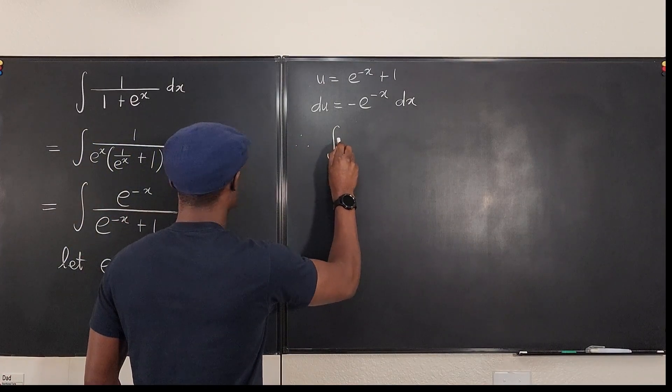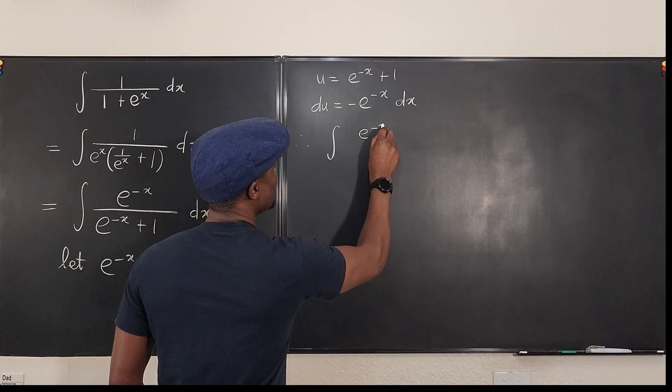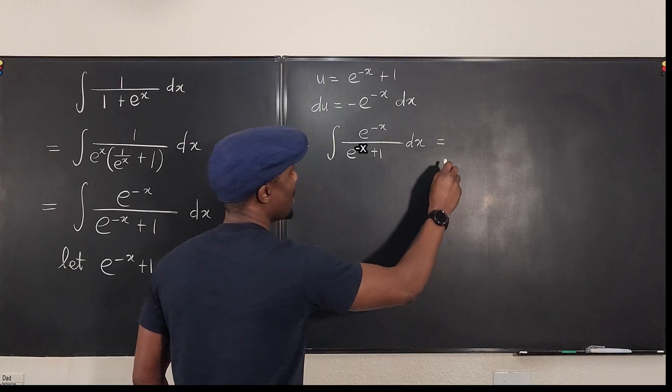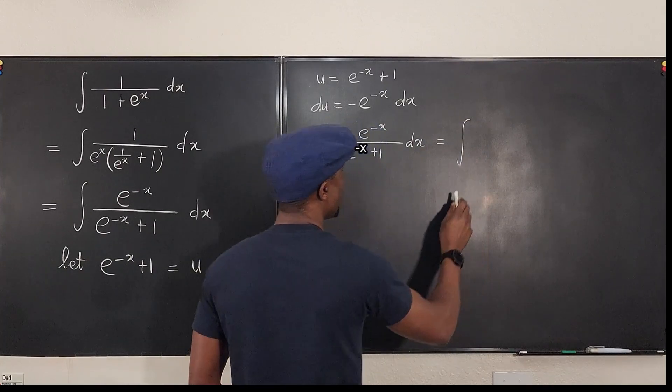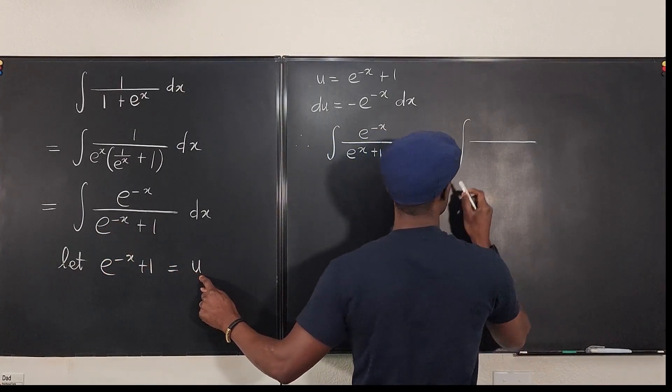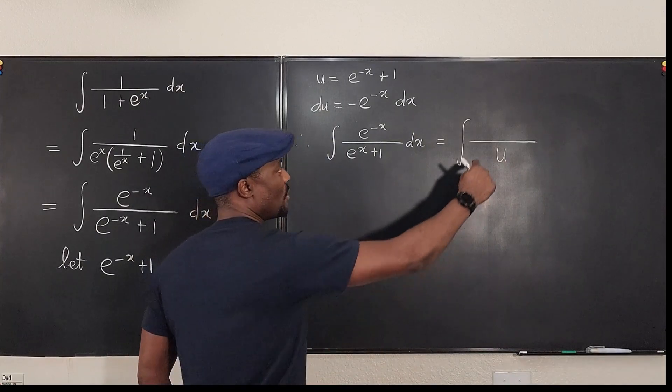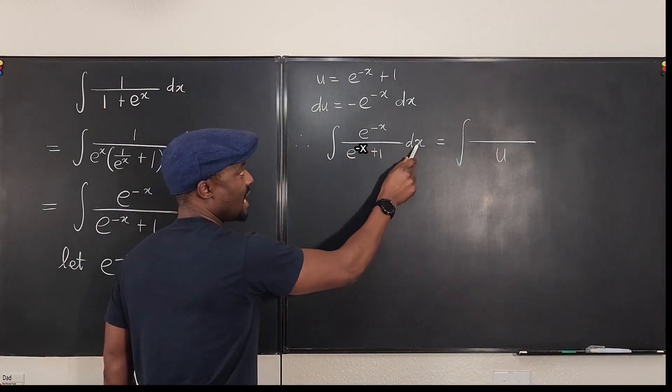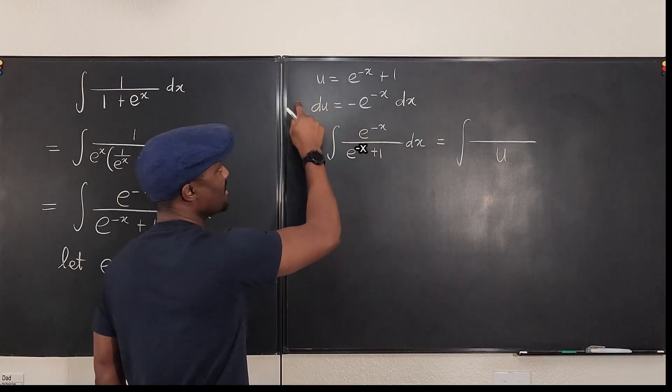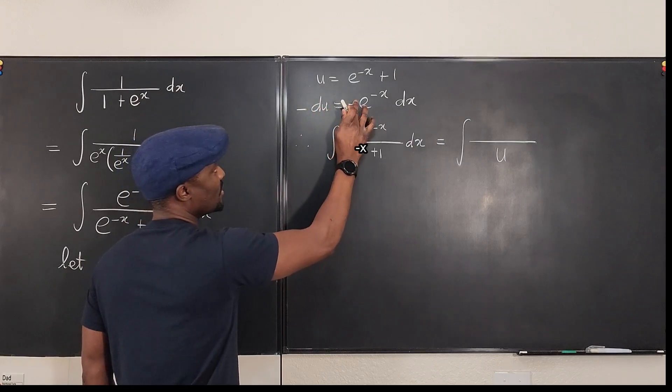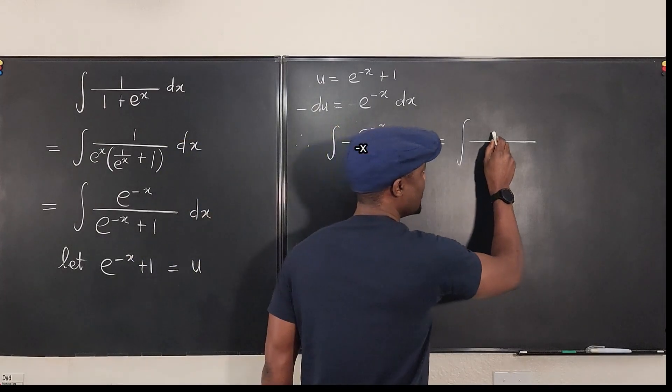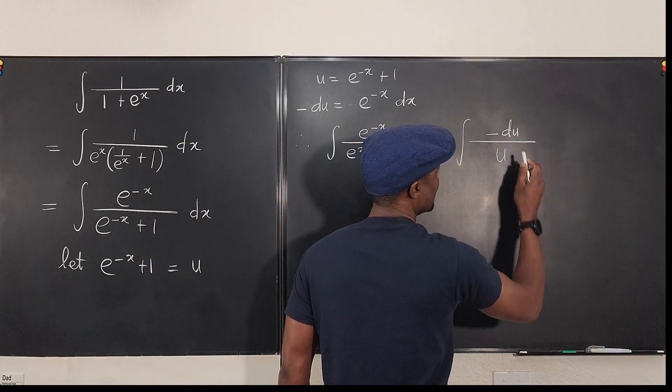So it means that this integral, therefore, the integral e to the minus x over e to the minus x plus 1 dx will become the integral. I'm going to write, e to the minus x plus 1 is my u, so there's u here. And what's supposed to be on top is e to the minus x dx. But e to the minus x dx is basically minus du. So I can multiply both sides by du so that this minus comes here. So I'm replacing e to the minus x dx with minus du. And that's it.